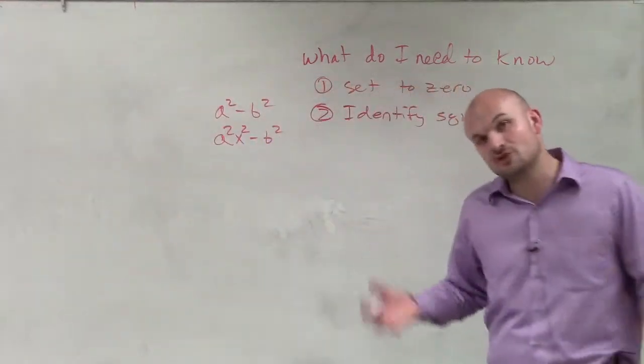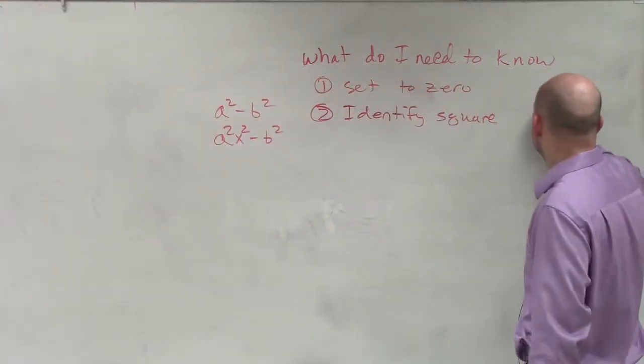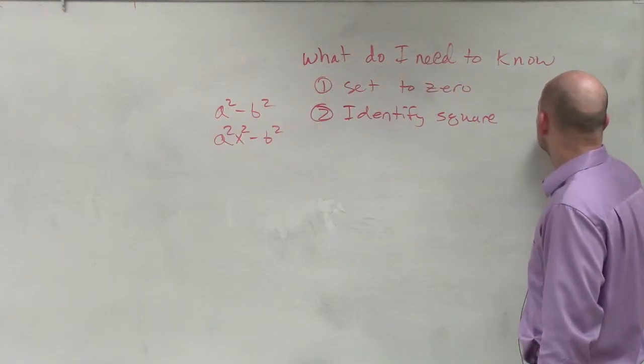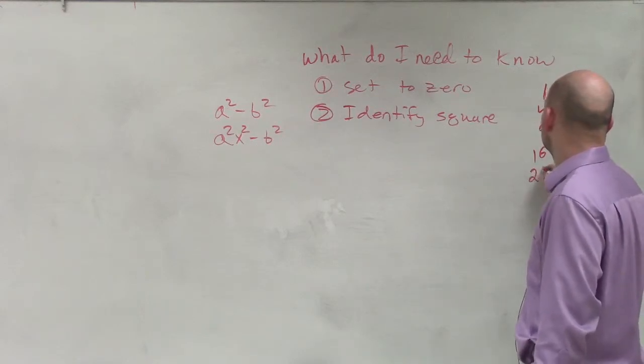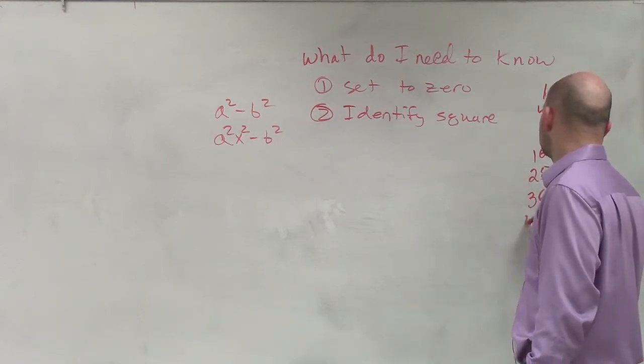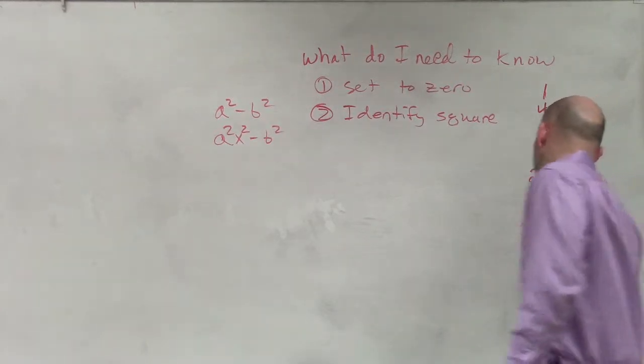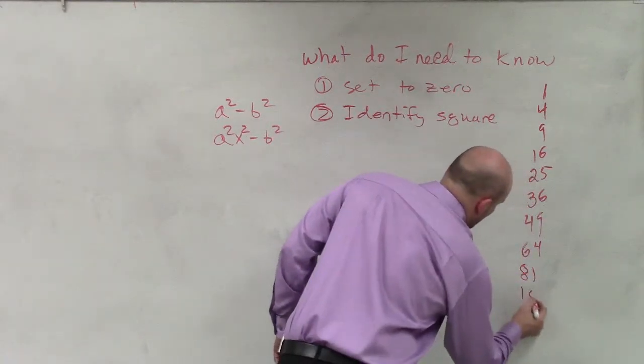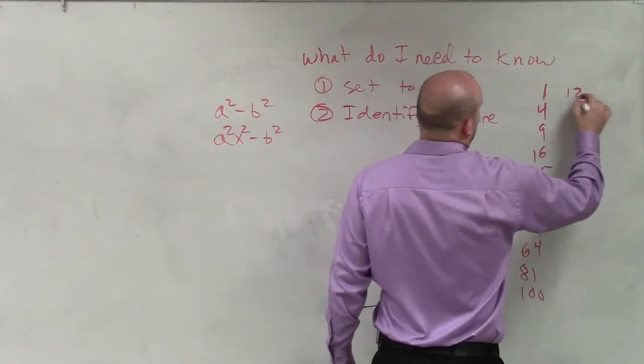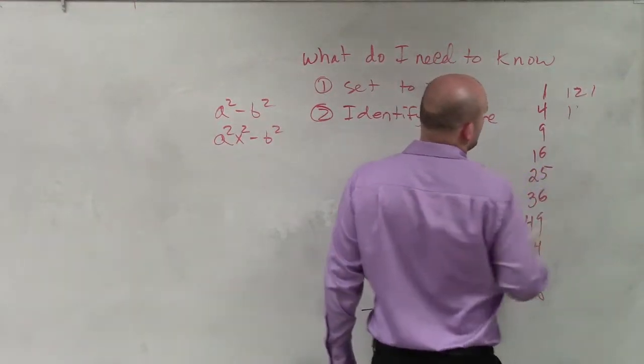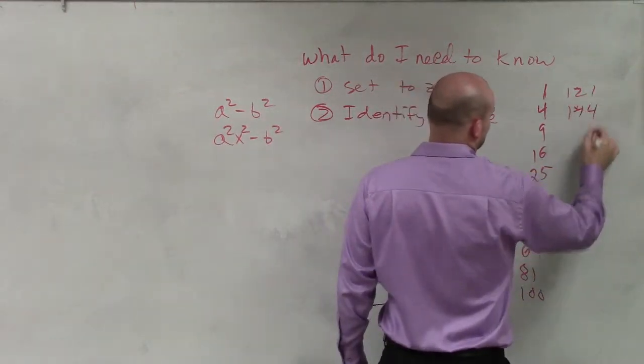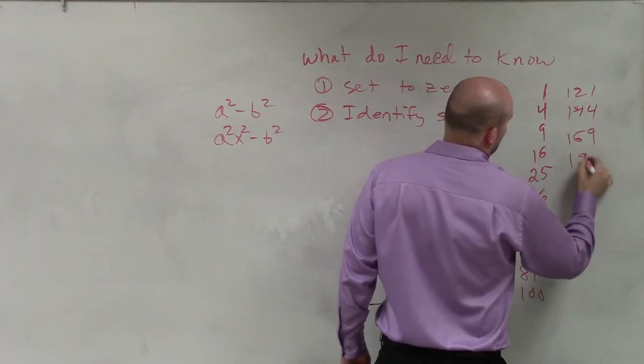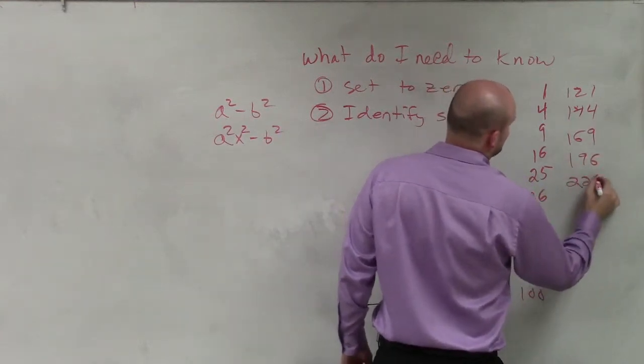And that can be in fractions or as integers. But some of the common numbers to look for that we'll be using in this course are 1, 4, 9, 16, 25, 36, 49, 64, 81, 100, 121, 144, 169, 196, and 225.